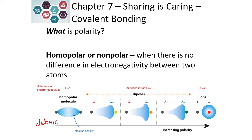As we increase electronegativity difference, we get larger and larger dipoles. The delta sign stands for partial, so we have a partial positive and a partial negative charge. This can increase all the way to where we completely transfer the electrons — this happens when we have metals and nonmetals on opposite ends of the periodic table, forming ionic bonds.